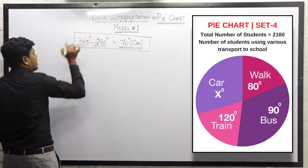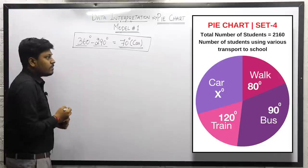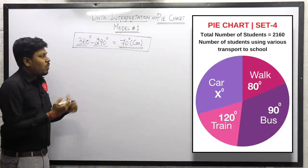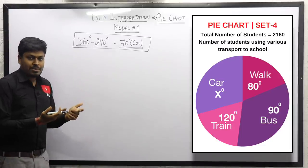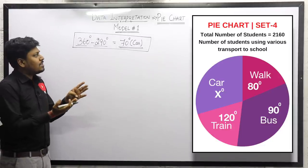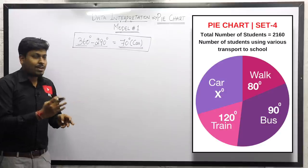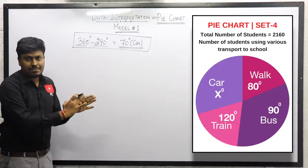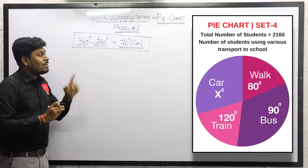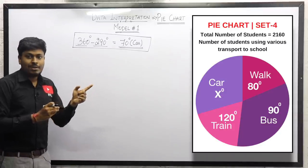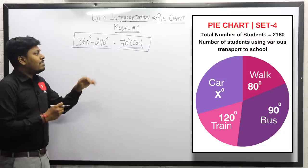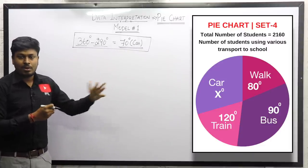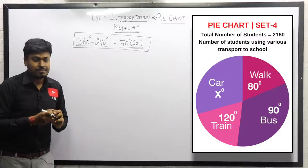So the value of car is 70 degrees. Now let's move on to all the questions. In previous videos all values were given in the chart, but here one value was missing, so we first found the car value before proceeding to the five questions.